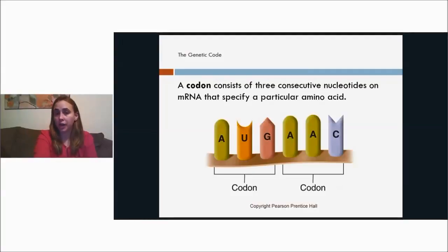A codon consists of three consecutive nucleotides on mRNA that specify a specific amino acid. So the codon wheel that we use, or the codon chart that we use a lot of time to find out which amino acid we have coding for, that's talking about three nucleotides from the mRNA strand, specifically the mRNA strand.